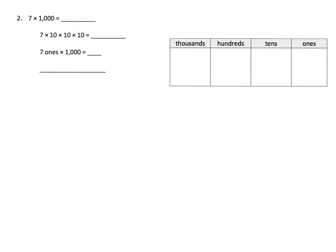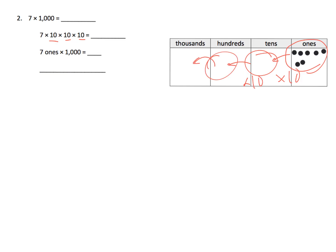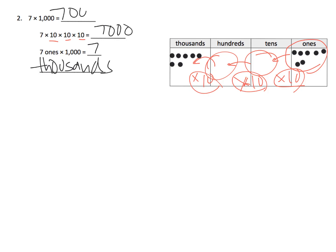Here's another example. We've got seven in the ones column again. This time we are multiplying by ten times ten times ten. These disks are going to move over one column for the first times by ten, then a second column, then into that third column — and we end up with seven in the thousands place. So that means we end up with seven thousands.